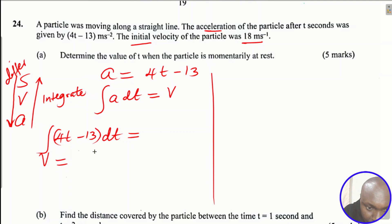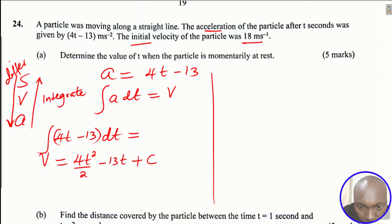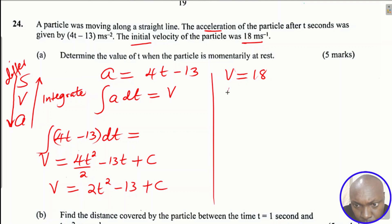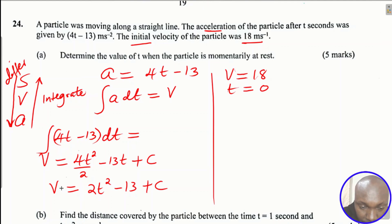When we integrate 4t minus 13 with respect to t, we get 4t squared divided by 2 minus 13t plus a constant C. Simplifying: velocity equals 2t squared minus 13t plus C. Now, using the initial condition — the initial velocity is 18 m/s, meaning at t equals 0, v equals 18 — we substitute these values and get C equals 18.